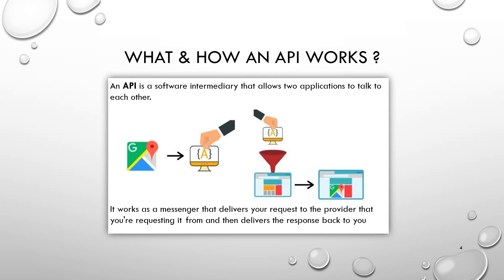So let's first try to understand what an API is. If you are from a Java background, I'm sure you will have some basic knowledge about it. But for a broader audience, I will talk about API from the very beginning. API stands for Application Programming Interface, which is nothing but an intermediate layer that allows applications to talk to each other. In other words, it is nothing but a messenger that takes the request and provides the response back after server-side processing.